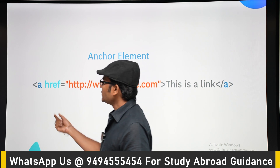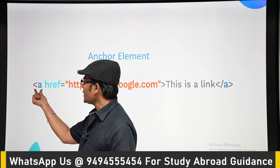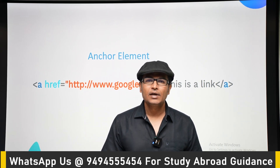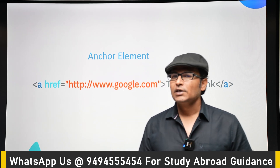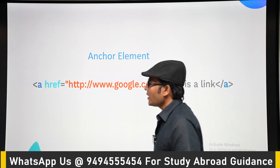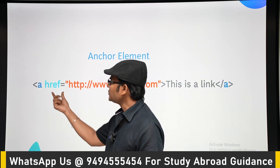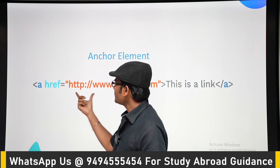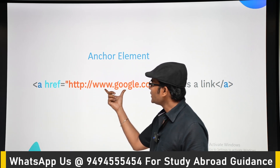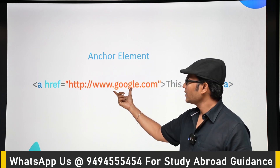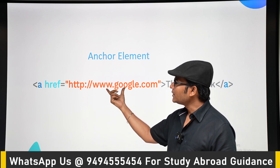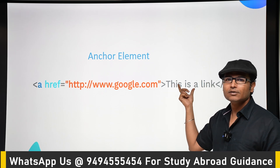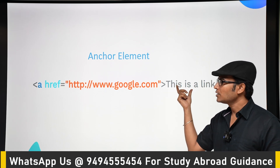Let's see an example. The anchor tag, written as 'a', is used to embed links within text. It has an attribute called 'href', and this href contains a link. Whatever link is specified will be embedded within the text.